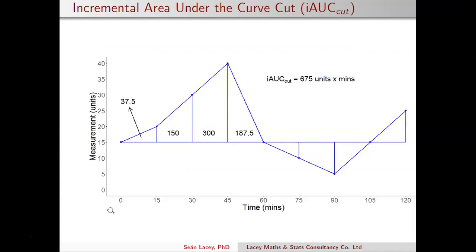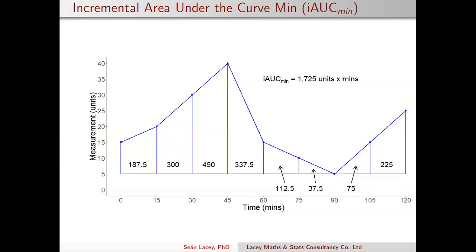The last calculation I want to look at is the incremental area under the curve above the minimum measurement. This is actually a relatively straightforward one because it's very similar to the trapezoidal rule. With the standard trapezoidal rule, it takes everything above the horizontal axis. So all we need to do is use the trapezoidal rule but tell it to start at five — the minimum — instead of starting at the origin.